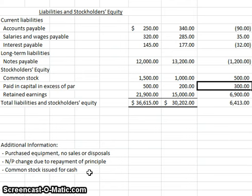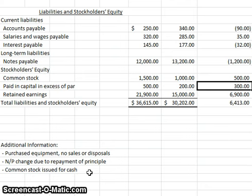If we issued stock for cash, we definitely want that on the cash flow statement. However, if we had instead issued stock in exchange for equipment — trading stock for equipment rather than paying cash — that would be disclosed at the bottom of the cash flow statement in a section called non-cash investing and financing activities. That section shows major non-cash items that changed some accounts. That's not happening here, but it would be referenced at the bottom if it had.